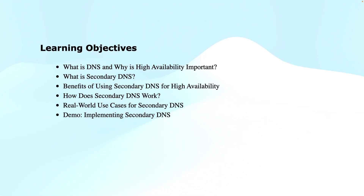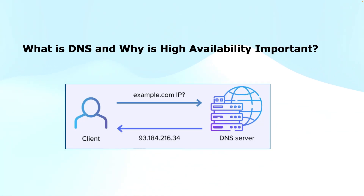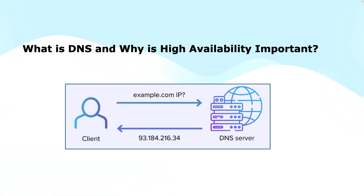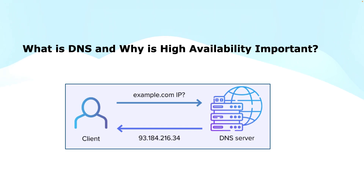First, let's quickly refresh on what DNS is. The Domain Name System translates human-readable domain names like example.com into the IP addresses that computers use to communicate with each other. It is an essential part of how the internet works, and any downtime or failure of your DNS server can cause websites, emails, or services to become unreachable. This works like a phone book that translates your contacts' names to their numbers.